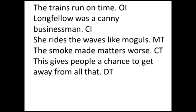Here's a recap of all five clause structures: 'The trains run on time' — ordinary intransitive, no direct object. 'Longfellow was a canny businessman' — complex intransitive; the be verb never assigns direct objects, it assigns predicative complements. 'She rides the waves like moguls' — monotransitive, one direct object. 'The smoke made matters worse' — complex transitive, direct object plus predicative complement. 'This gives people a chance to get away from all that' — ditransitive, indirect object and direct object.